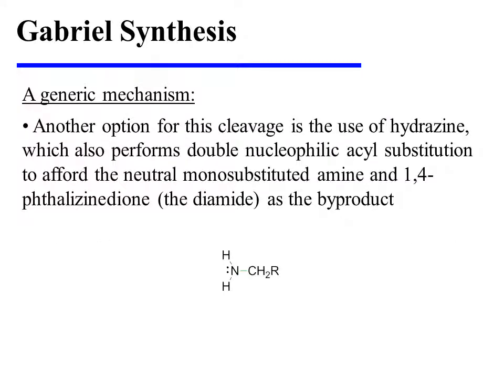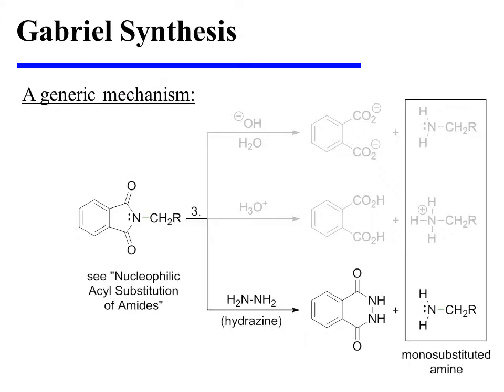A third option for this cleavage is the use of hydrazine, which also performs double nucleophilic acyl substitution so as to afford the neutral monosubstituted amine — that's our product of interest — and 1,4-thalazinedione as a byproduct. That final option is diagrammed on this slide. The substrate may be treated with hydrazine to clip off the undesired portion of the reactant as its diamide, and the monosubstituted amine is released during this process.